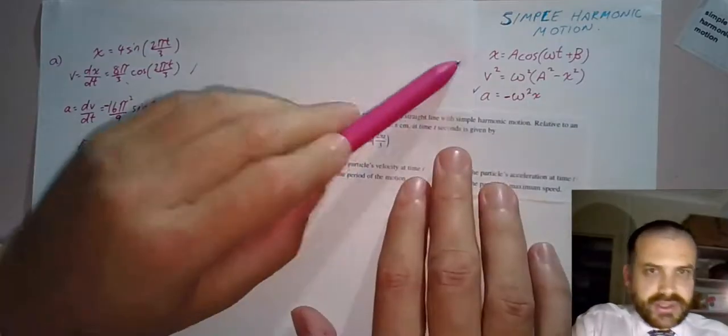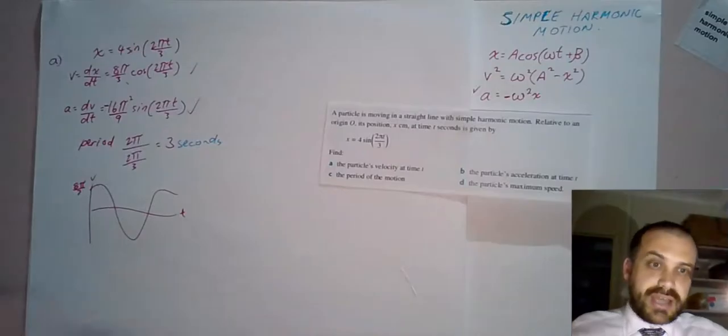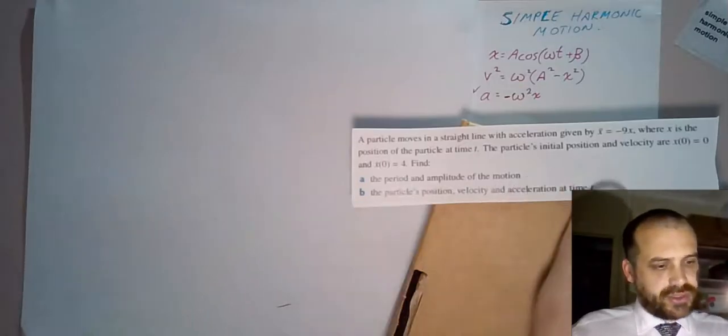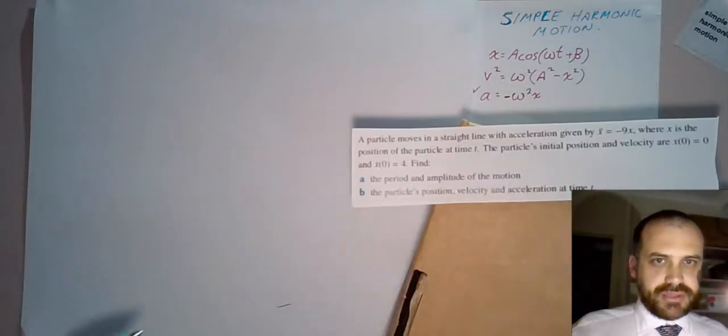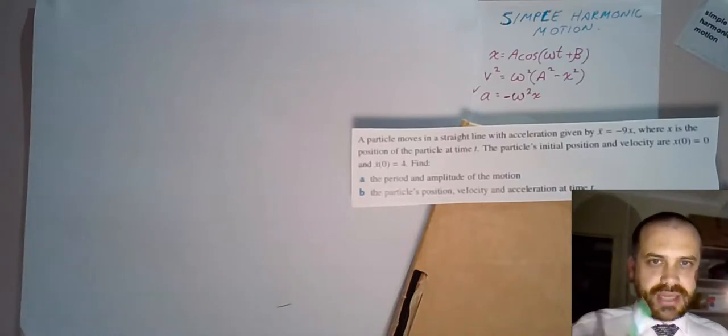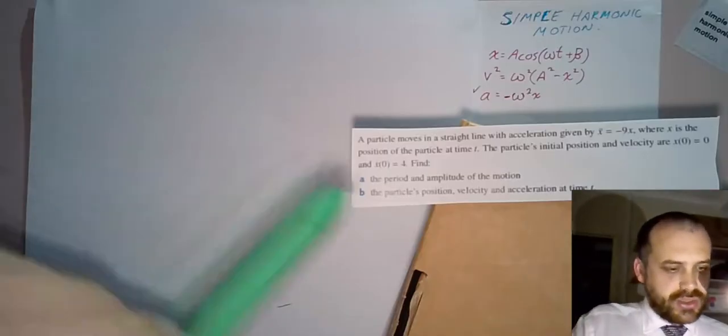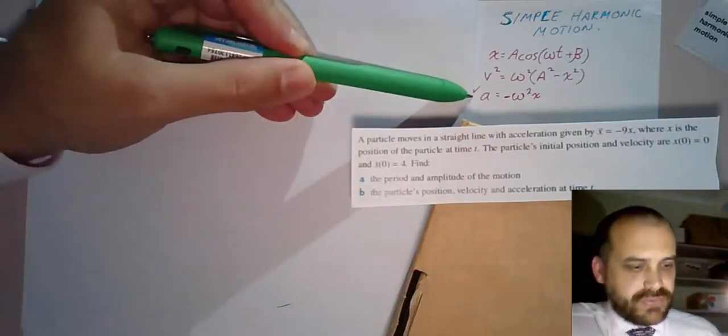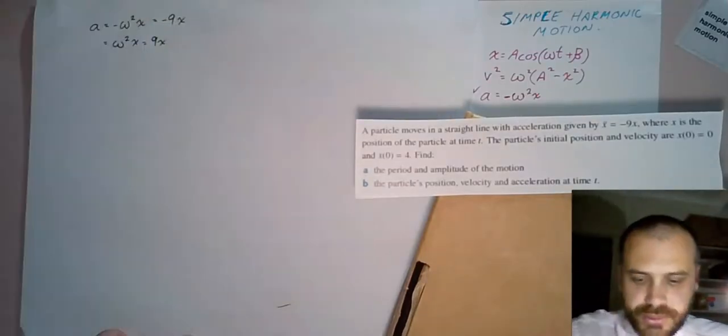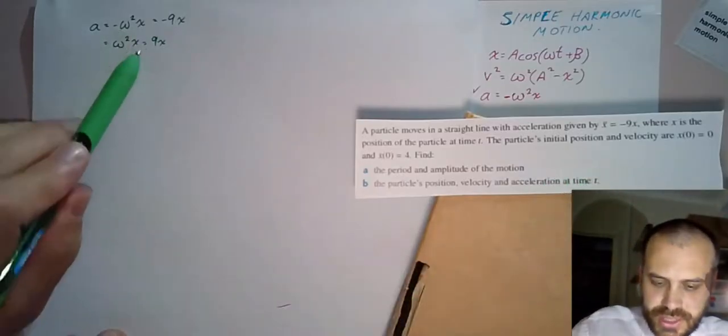This question doesn't really have anything to do with these formulas, but I needed to show it to you so you can see how different our next question is. Here's our second example. A particle moves in a straight line with acceleration given by this function, where x is the position at time t. Find the period and amplitude of the motion.